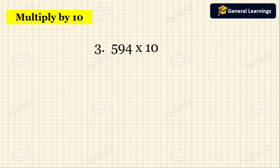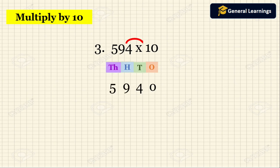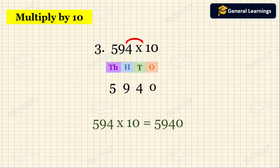Now we will see another example. They have given 594 into 10. So 10 has one zero. That zero should be written in the ones place. Now we are going to multiply the remaining number, that is 594 into 1 — we get 594. So 4 should be written in the tens place, 9 should be written in the hundreds place, and 5 should be written in the thousands place. So 594 into 10 equal to 5940.